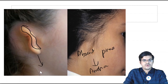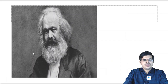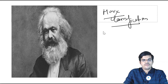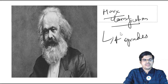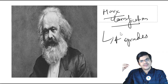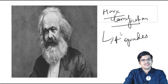Microtia has a grading — it is graded by the Marx classification, graded into four grades depending upon the development of the pinna. In the fourth grade it is so severe that there will be anotia. If you look carefully at this picture, Karl Marx's ears are not visible — you can assume that Karl Marx is having microtia, so that you remember.